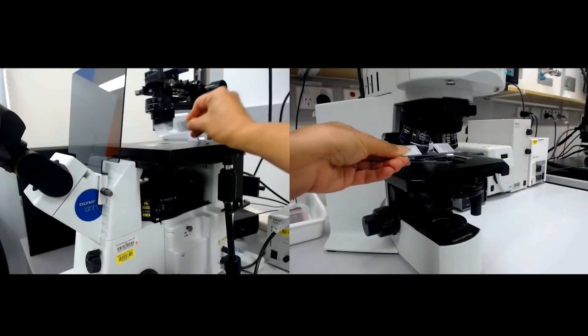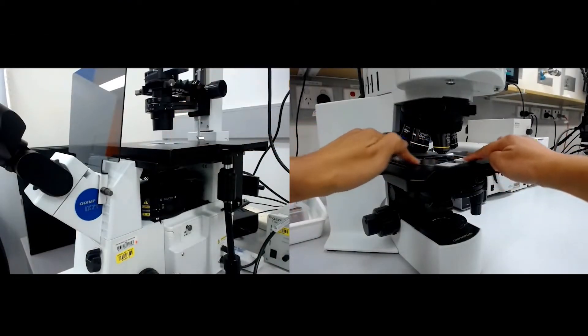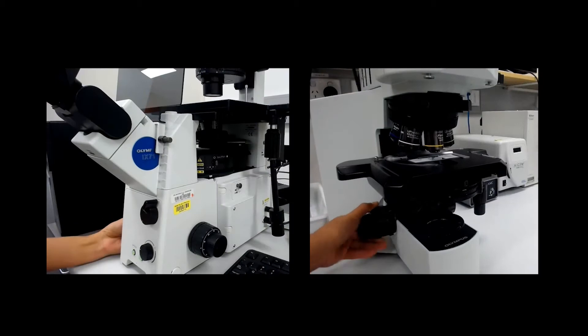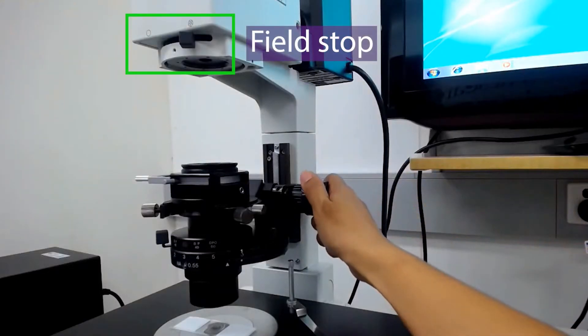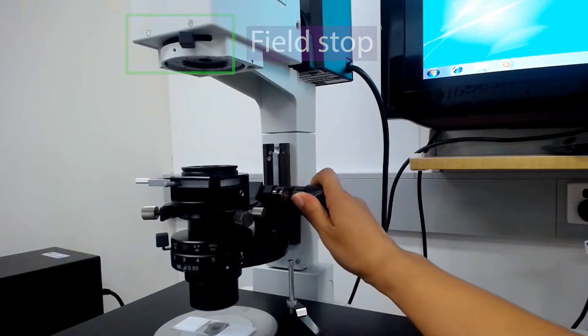Put your sample on the microscope with the coverslip facing the objective and focus on the sample. Adjust the field stop and focus of the condenser to make sure you have achieved Köhler illumination.